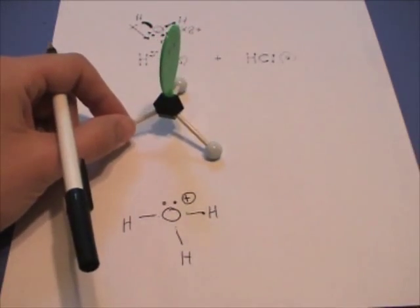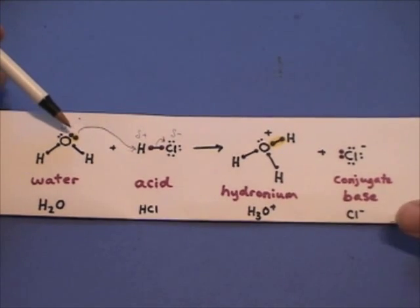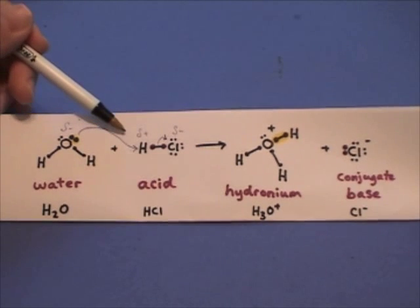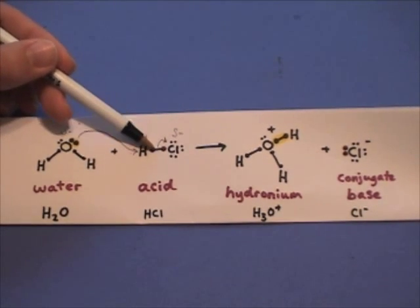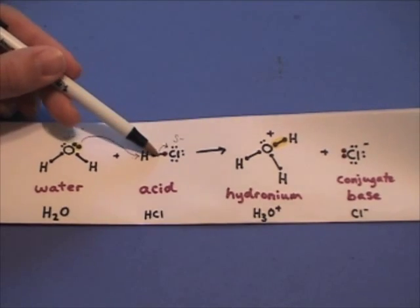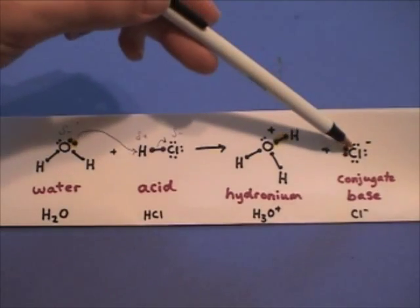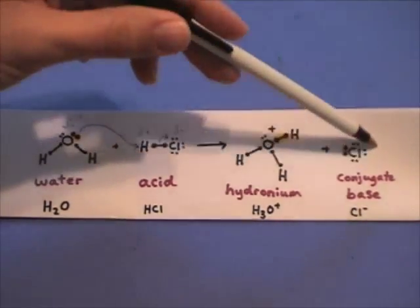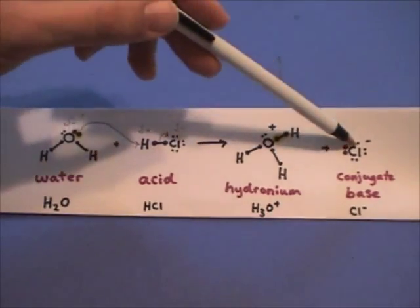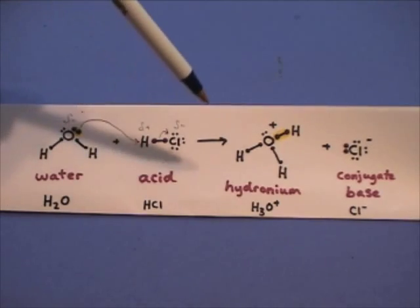So let's recap. The electrons on the water are donated to this proton of the acid. And then these two electrons that were bonded between the H and the Cl go on to the Cl atom forming H3O plus and Cl minus. So hydronium and chloride. These are all in solution with a lot of water molecules.